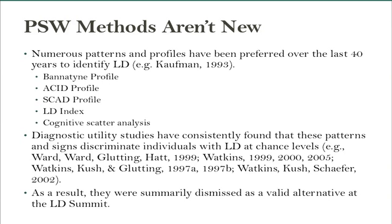ACID stands for arithmetic, coding, information, and digit span. If you had low scores on those subtests relative to other subtests, that was taken as a potential diagnostic indicator of LD. A lot of these come from intelligent testing, from Kaufman.